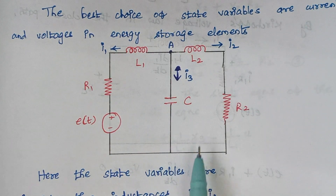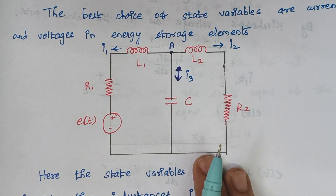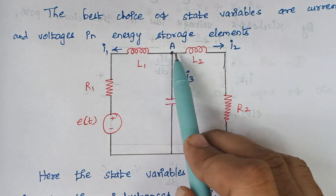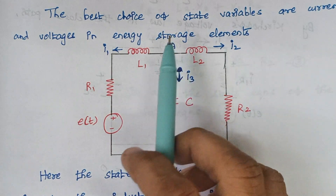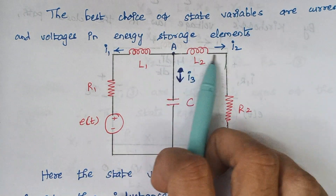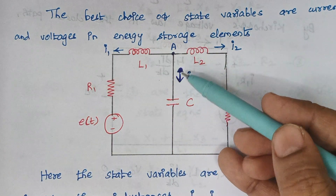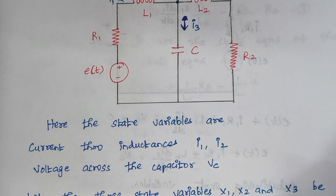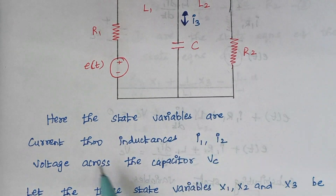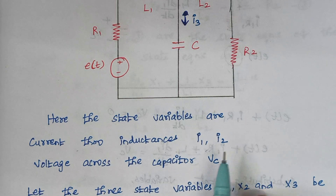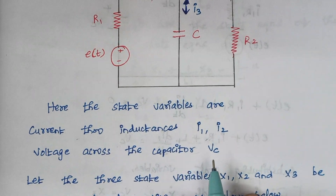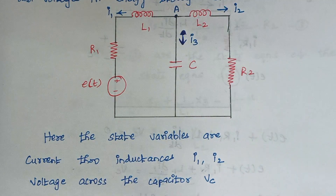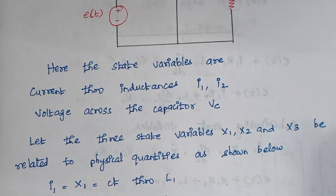From this circuit diagram we are going to fix the values of current by ourselves. Let this be node A. I1 is the current flowing through L1, I2 is the current flowing through L2, and I3 is the current flowing through capacitor C. The state variables are the currents through the inductances I1 and I2, and the voltage across the capacitor Vc.